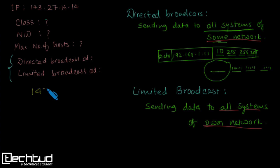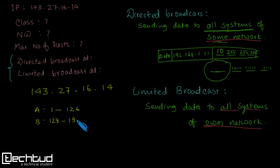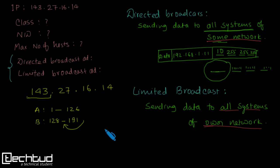Now let's solve the problem. We have been given the IP address 143.27.16.14. First we need to identify the class. Class A ranges from 1 to 126, and Class B ranges from 128 to 191. The first octet is 143, which falls in the Class B range, so this is a Class B IP address.